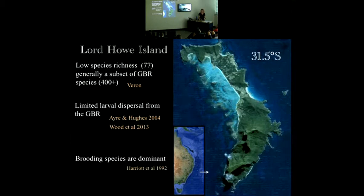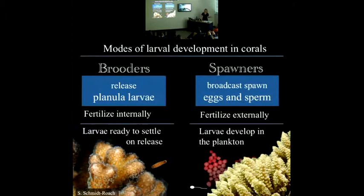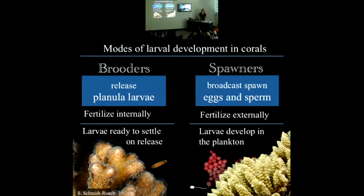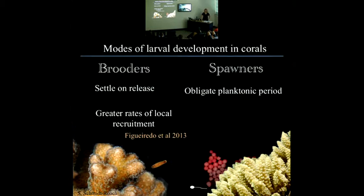An interesting observation about Lord Howe Island is that brooding species are quite dominant on that reef. Brooders release fully formed planula larvae that are immediately competent to settle and grow — they fertilize internally. Spawners send out egg and sperm into the water column for external fertilization, and it takes a few days to develop into a larva that's competent to settle. Brooders settle on release, whereas spawners have an obligate planktonic period. This might mean that brooders are better colonizers because, as Joanna found, they have greater rates of local recruitment compared to spawners.